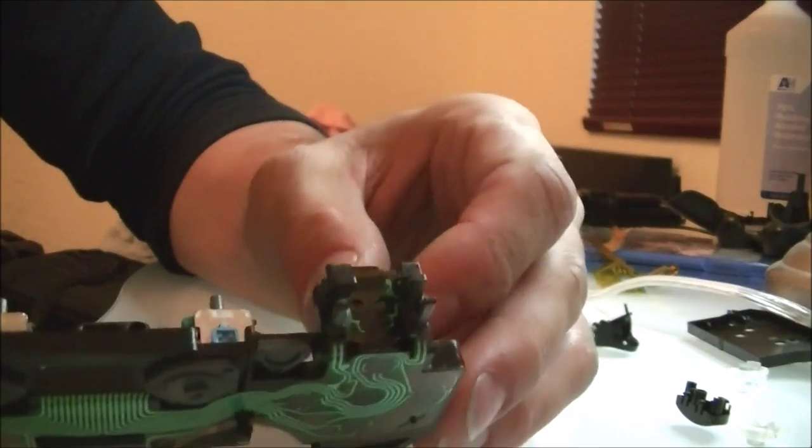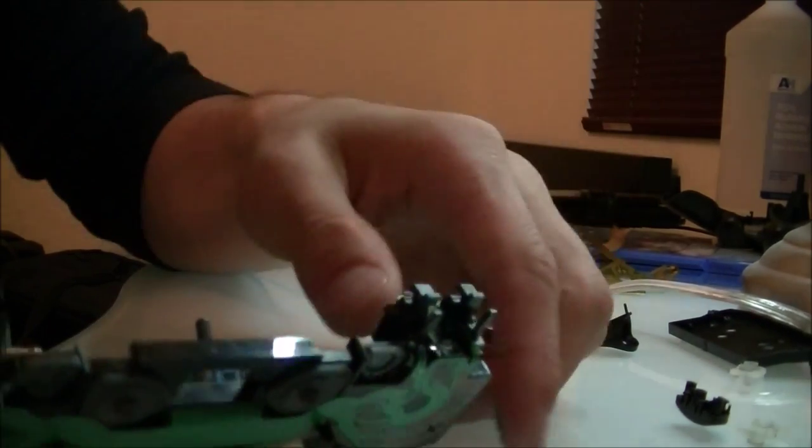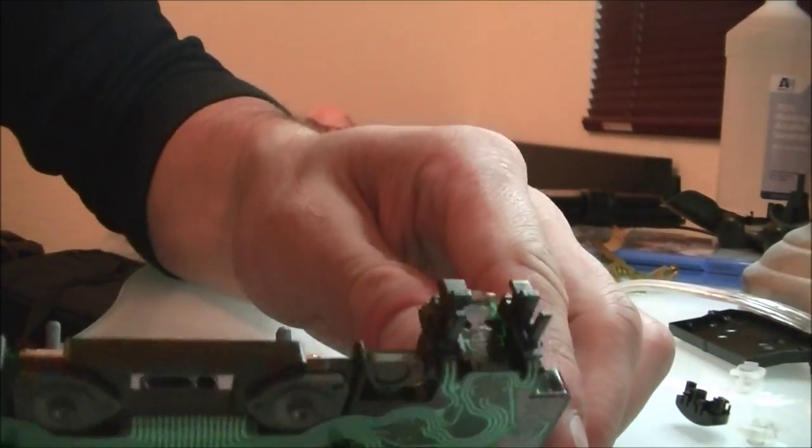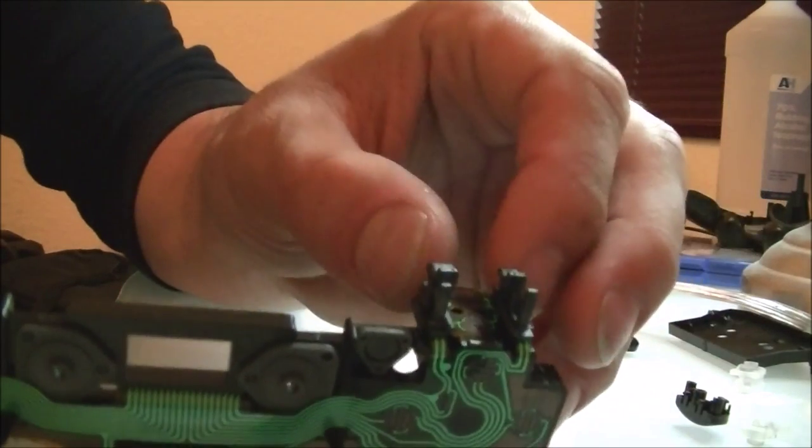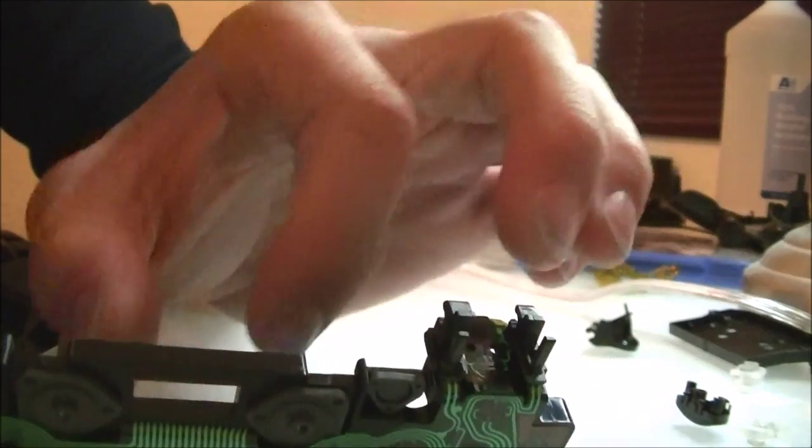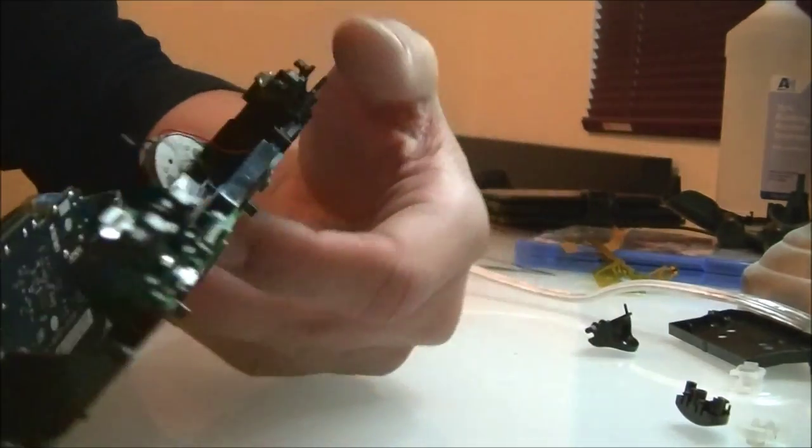You press a button and it's going to register on the circuit board film pad. The circuit board film pad is going to bring that signal over to the side of the motherboard and the motherboard is going to register that you have pressed that button and it will by Bluetooth tell the PlayStation that you have in fact done that series of button presses.